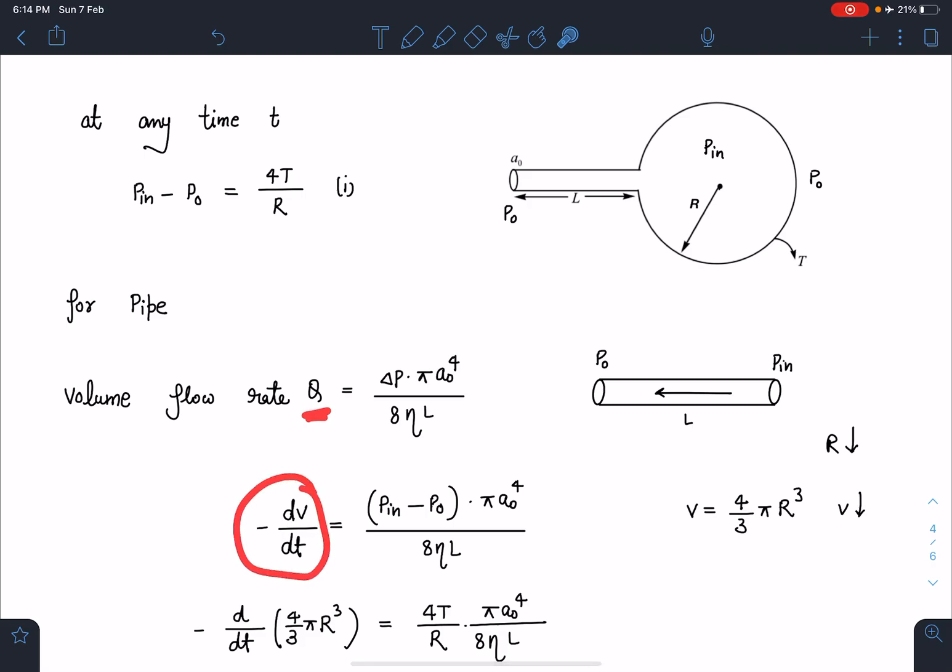Here volume flow rate I can write as dV/dt where V is the volume of the bubble. This volume is decreasing so whatever decrease in the volume will come, that will be the volume flowing through the tube.